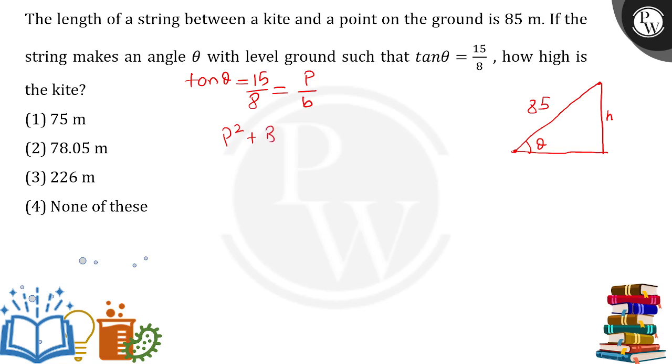If perpendicular is 15 and base is 8, then doing the equation: 15² + 8² = 225 + 64 = 289. So h² = 289, which means h = 17.